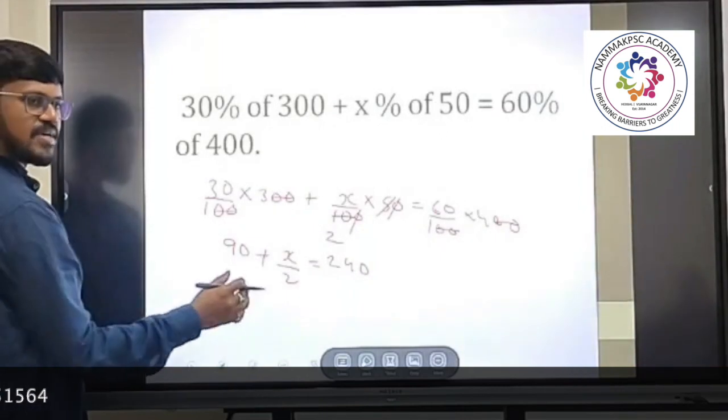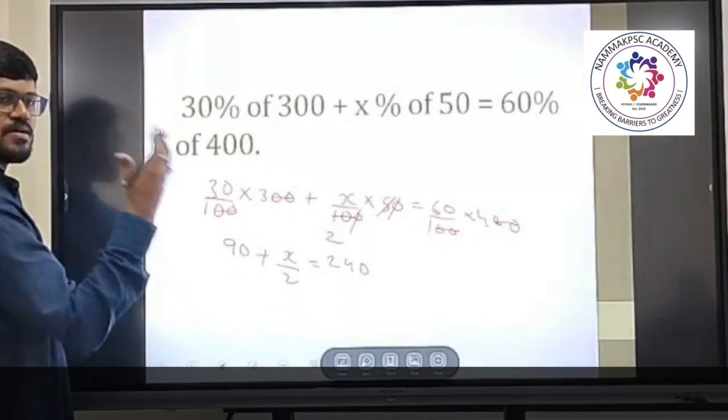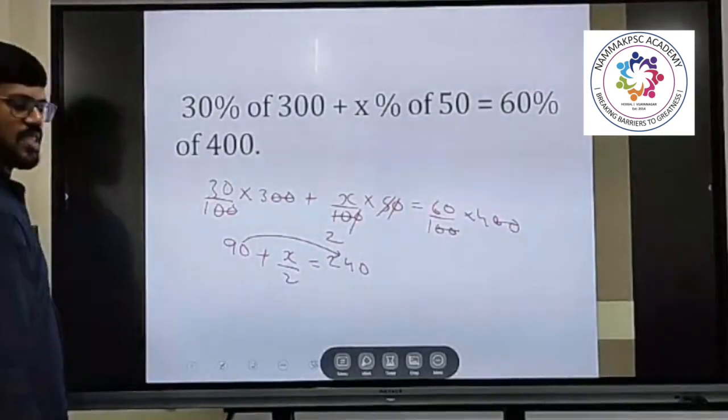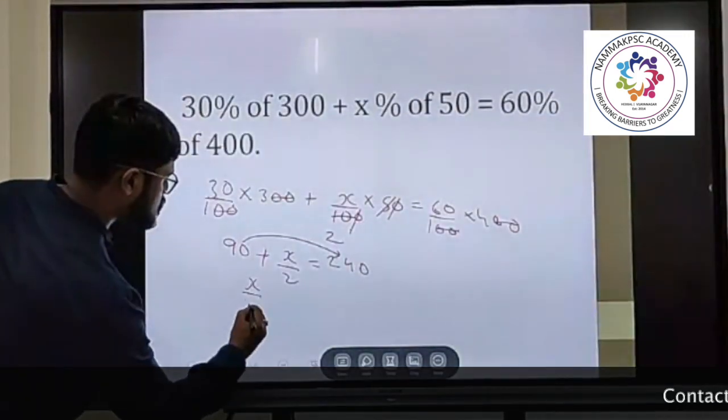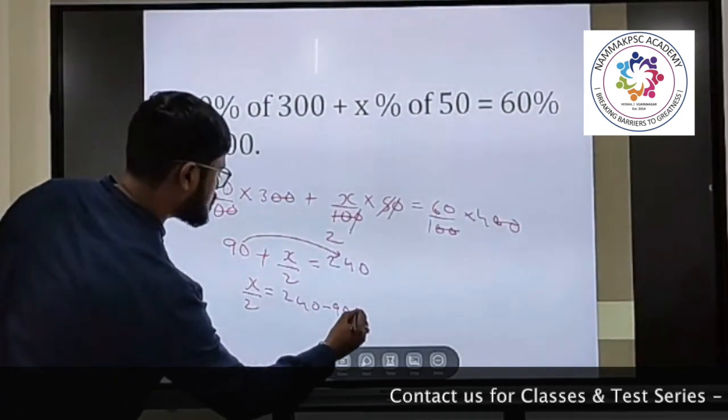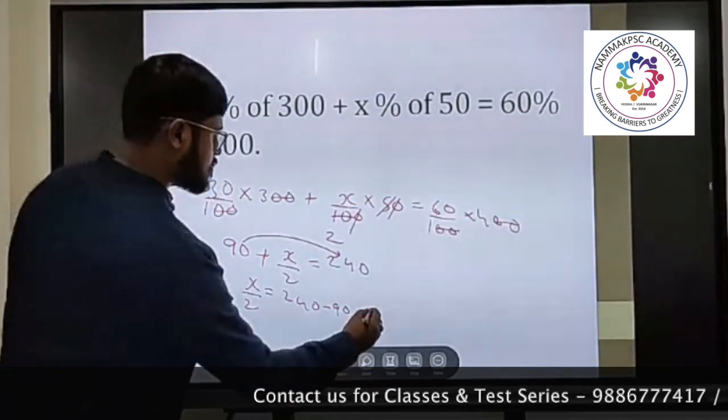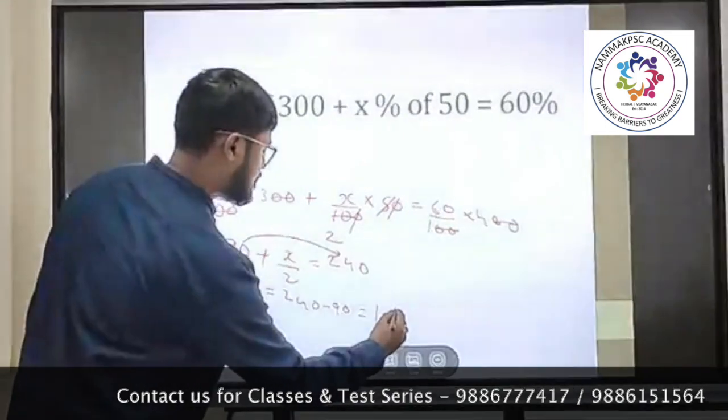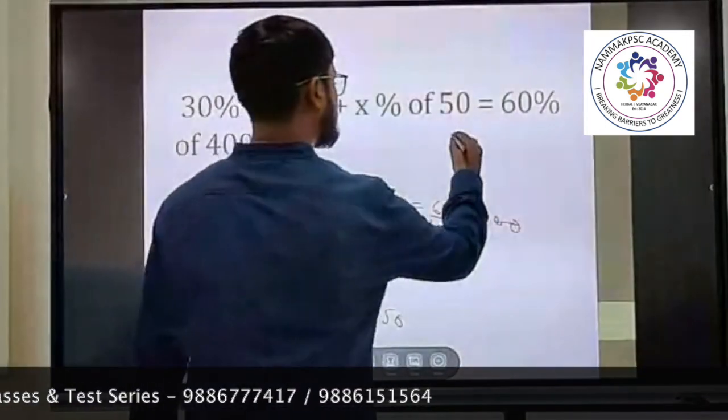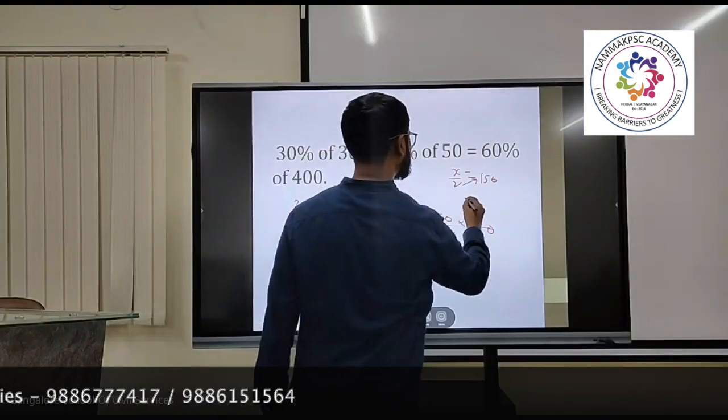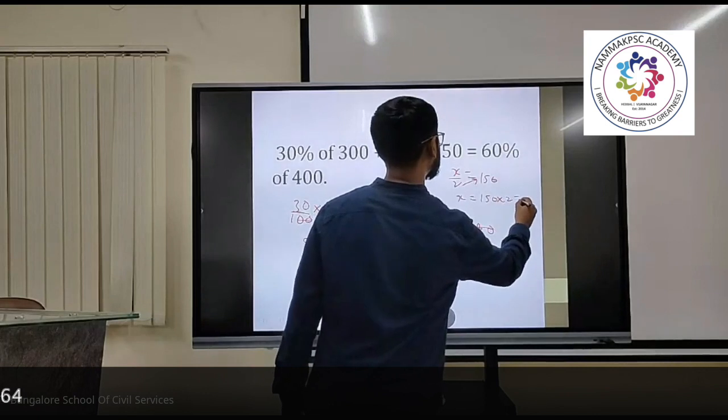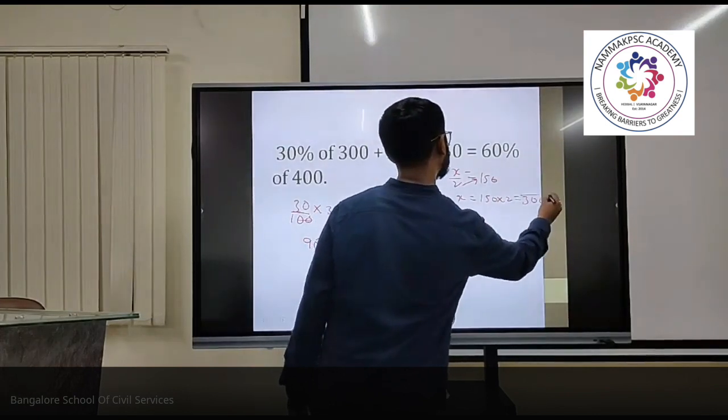So x by 2 is on one side, we'll take all the numbers on one side, all the variables on the other side. This 90 can be shifted here. This will become x by 2 equals 240 minus 90. 240 minus 90 is 150, so x by 2 equals 150. This 2 will go on the other side, x will become 150 into 2, that is 300. 300 is the final answer.